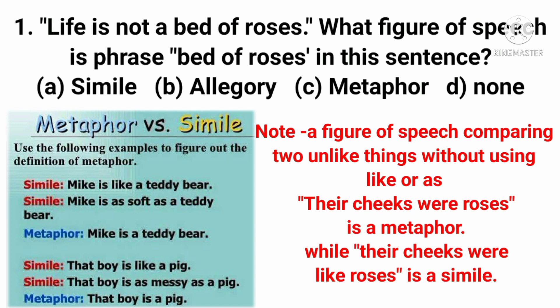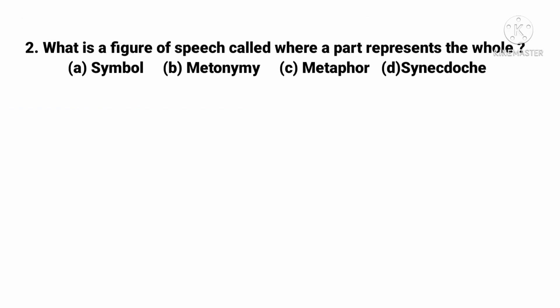For example: 'My kid is like a teddy bear' uses 'like'; 'My kid is as soft as a teddy bear' uses 'as'; 'My kid is a teddy bear' uses neither — that is a metaphor. So this is the difference between simile and metaphor. If the definition says 'without using like or as,' tick metaphor; if it says 'with the use of like or as,' tick simile.